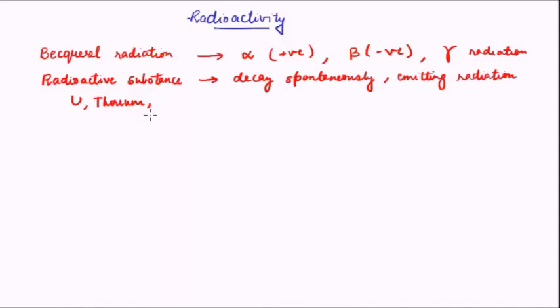Now an important aspect about radioactive substances is that any physical change or any chemical change imparted to the material does not lead to change in the rate of radioactivity. This implies that the radioactivity, phenomena of radioactivity, is not due to the outer electrons, rather it is a nuclear phenomena. It is due to the nucleus. The nucleus is unaffected by physical or chemical changes.